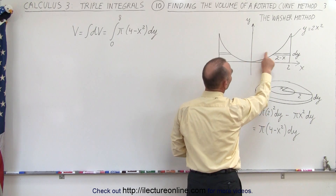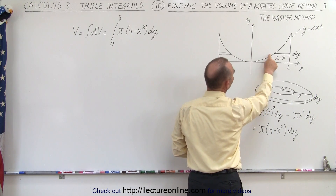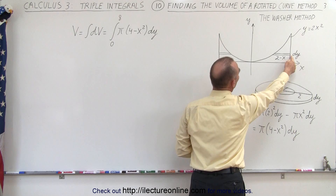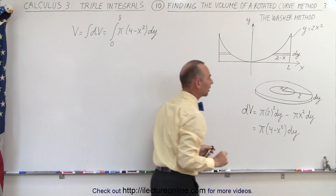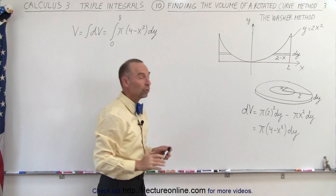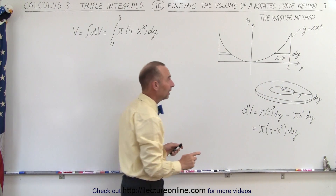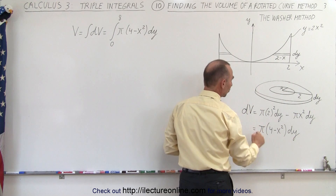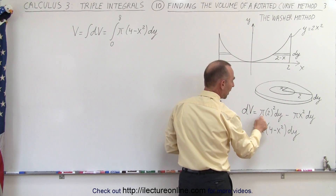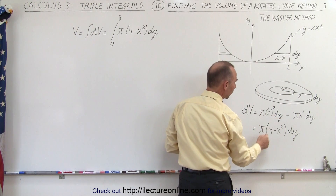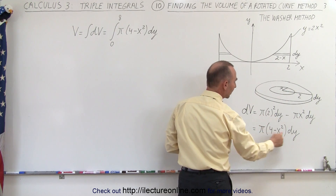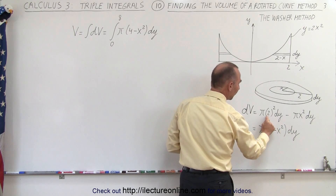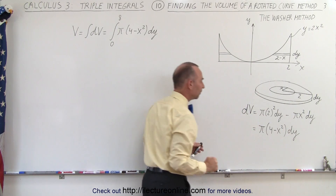The distance from there to there is x. This distance is 2, so 2 minus x would be that distance right there. We can see that if we want to find the volume of the washer, we simply factor out a pi and a dy, giving us pi dy times the quantity 4 minus x squared.